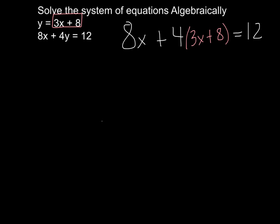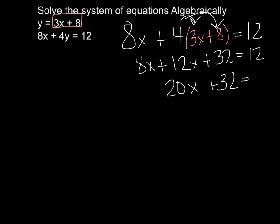Now I'm just going to solve. So I'm going to distribute. 4 times 3 is 12x. 4 times 8 is 32, still equal to 12. 8x plus 12x is 20x. 20x plus 32 equals 12.